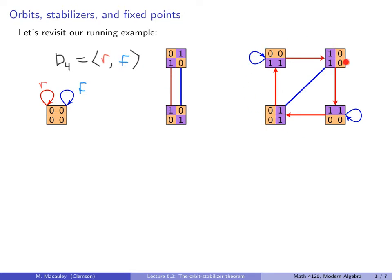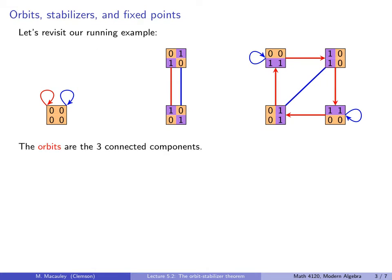Over here we have these two checkerboard squares. If you rotate the first one 90 degrees, you get to the second one, and if you flip it across the vertical axis you also get to that one — and doing those actions again sends you back. So we have a double red arrow and a double blue arrow. The other four elements are over here. Starting with the upper-left 0011, applying F flips it vertically and sends it to itself, but rotating sends it to another element, and so on. The orbits of this action are the three connected components.